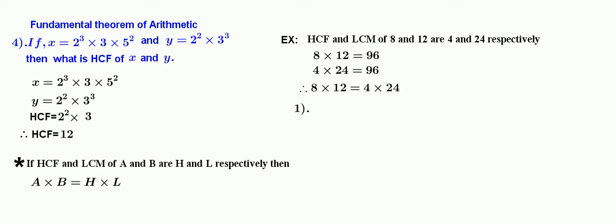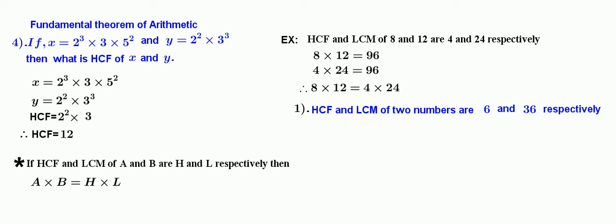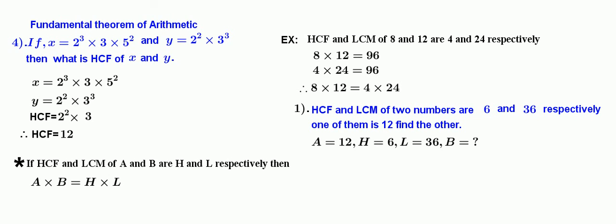Let us take a problem on this result. The HCF and LCM of two numbers are 6 and 36 respectively. One of them is 12; find the other number. Here, a equals 12, h equals 6, and l equals 36.